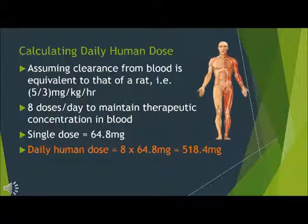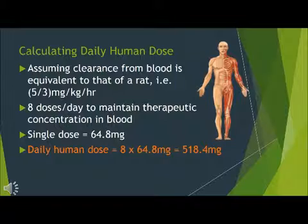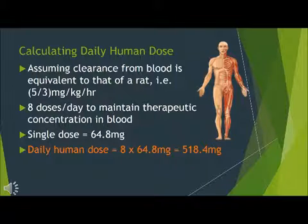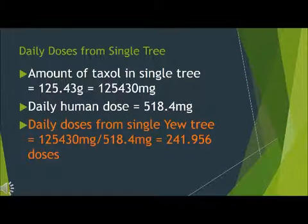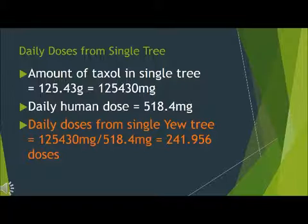Assuming that clearance from blood in a human is equivalent to that of a rat — 5 milligrams per kilogram every 3 hours — you will need 8 doses a day to maintain therapeutic concentration in the blood. A single dose for a human is 64.8 milligrams, so a daily human dose would be 8 times that: 518.4 milligrams. To calculate the number of daily doses from a single yew tree, we take the amount of taxol in the tree, 125,430 milligrams, and divide it by the human daily dose of 518.4 milligrams. This gives us approximately 241.96 daily doses.